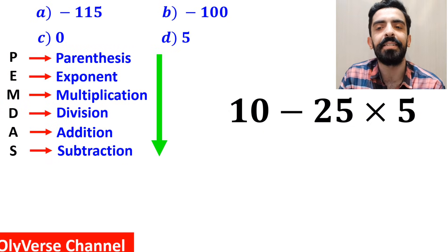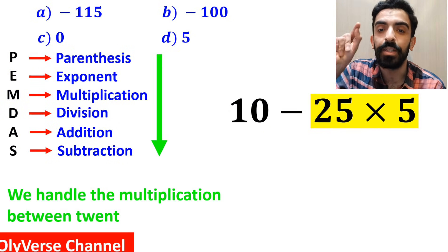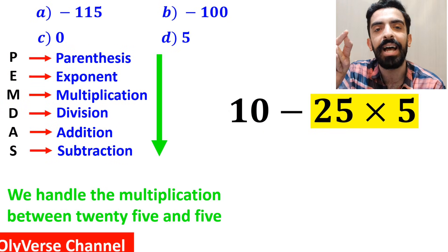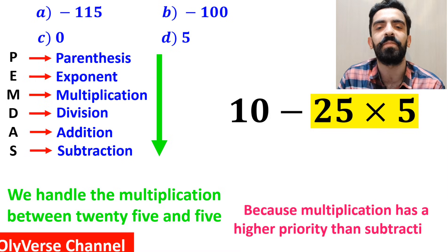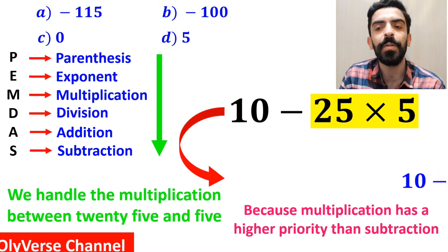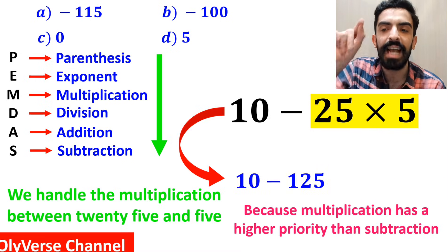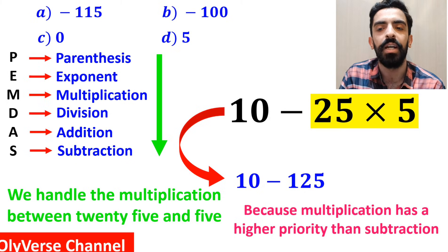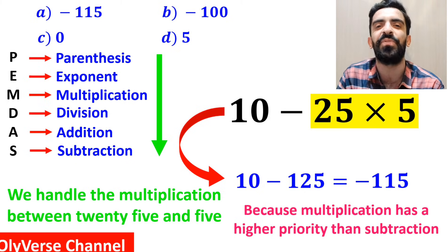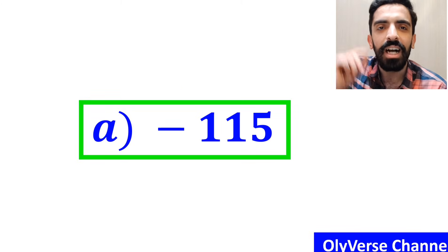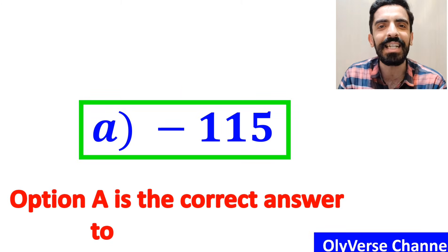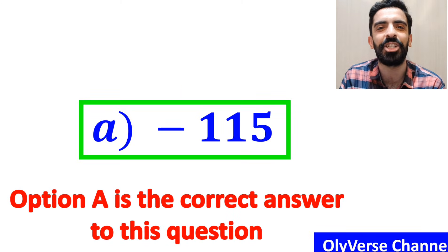In the next step, we handle the multiplication between 25 and 5, because multiplication has a higher priority than subtraction. And this expression simplifies to 10 minus 125, which ultimately gives us the answer negative 115. That's great. Option A is the correct answer to this question.